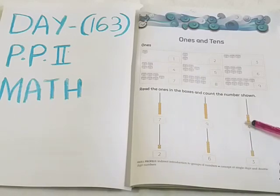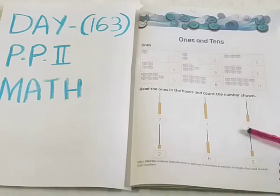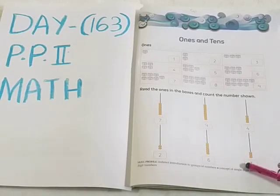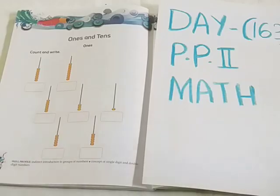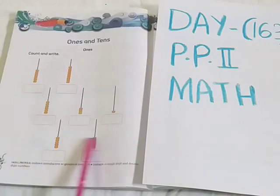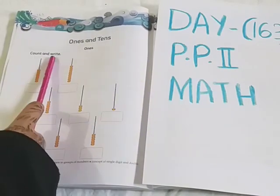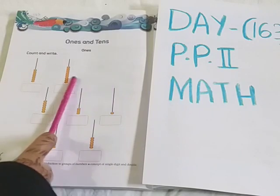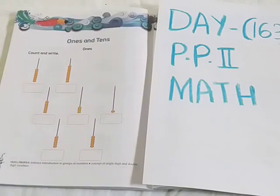There are 4 boxes, so you should write number 4 here. In the same way you have to do like this. Now we have an activity related to these children. Here you can see Ones and Tens. Count and write — you have to count the boxes and write the number.